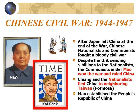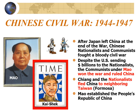After Japan left China at the end of the war, Chinese Nationalists and Communists fought a bloody civil war. Despite the U.S. sending billions of dollars to the Nationalists, the Communists under Mao won the war and ruled China. Secretary of State Alan Dulles described this as the greatest foreign policy failure in American history — because just three years after the Truman Doctrine pledged to stop the spread of communism everywhere, China had become communist. When China fell, one out of every five people in the world was now a communist. Chiang and the Nationalists fled to the neighboring island of Taiwan, also known as Formosa.